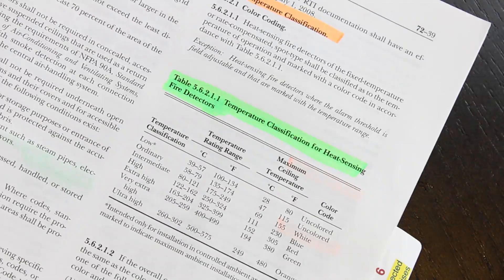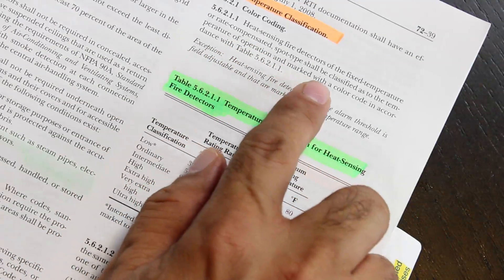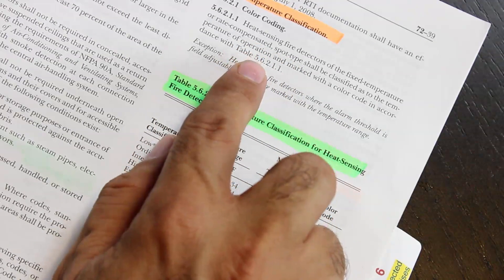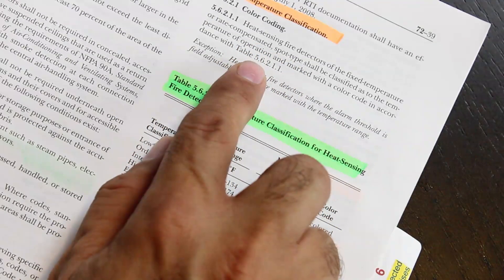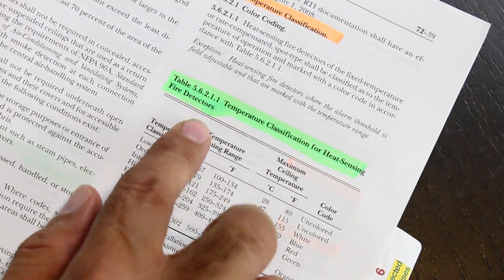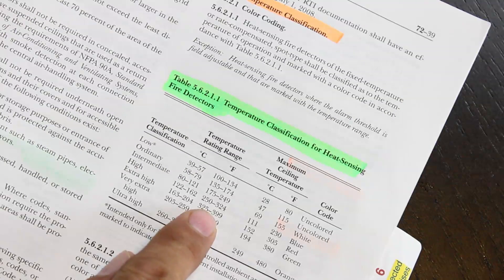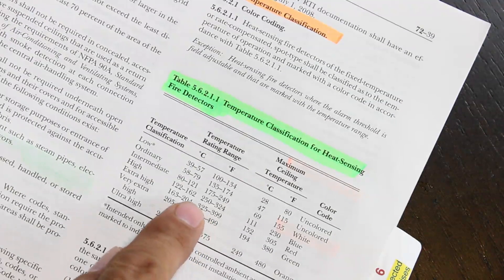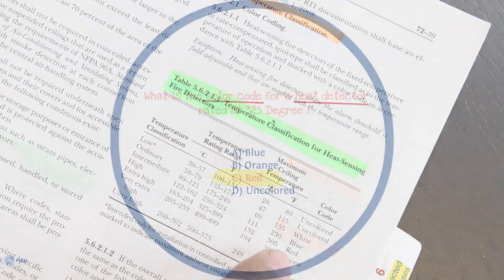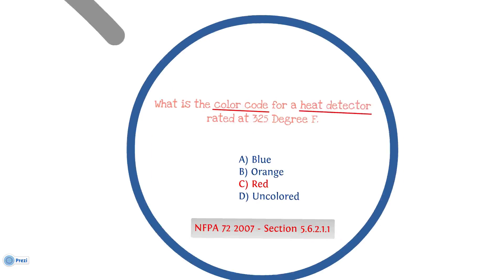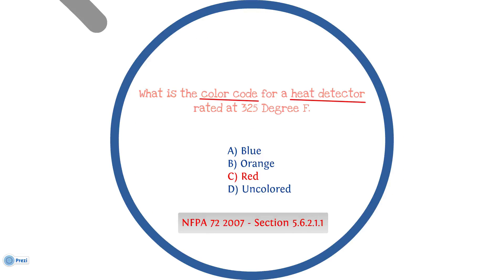Then heat sensing fire detectors of the fixed temperature spot type shall be classified as temperature of operation and marked with the color code in accordance with table 5.6.2.1.1. Here is the table. We said, what's the 325? We go for 325. 325 is color red. Coming back to the question, the answer is C, red. We find that in section 5.6.2.1.1 in NFPA 72, 2007 edition.